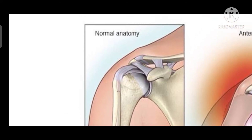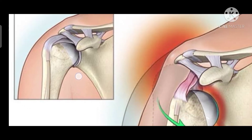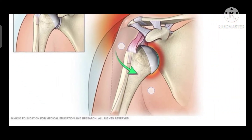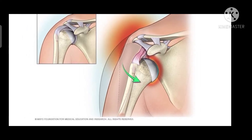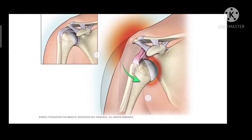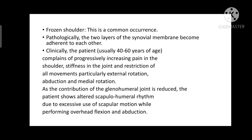In the diagram, the normal position and anterior dislocation are shown — in anterior dislocation, the head of the humerus is displaced from the glenoid cavity. Pathologically, in frozen shoulder, the two layers of the synovial membrane become adherent to each other.